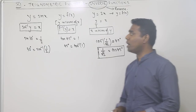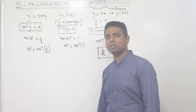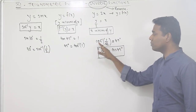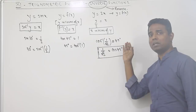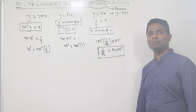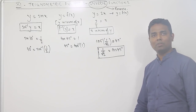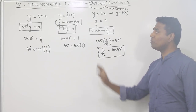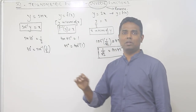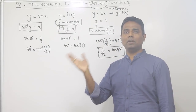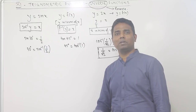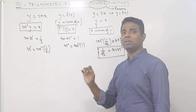The key point: shift the trig function to the other side and it becomes inverse. Shift the inverse to the other side and it becomes the trig function. You have to be very flexible with this.